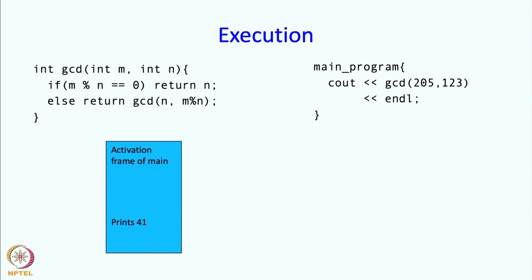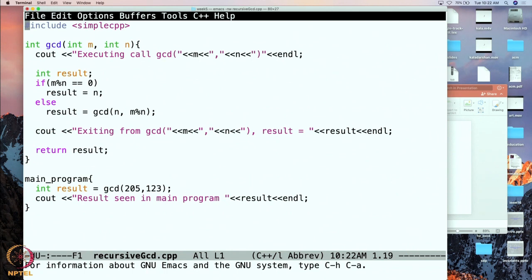As you can see, 41 is indeed the greatest common divisor of 205 and 123. All this seems to have worked quite well, and indeed it does. The execution turns out to be quite similar to the execution of the non-recursive program written earlier. Let us take a demo just to see that this actually runs and get a little more comfort with it. This program is the same as what you saw except for a few minor changes.